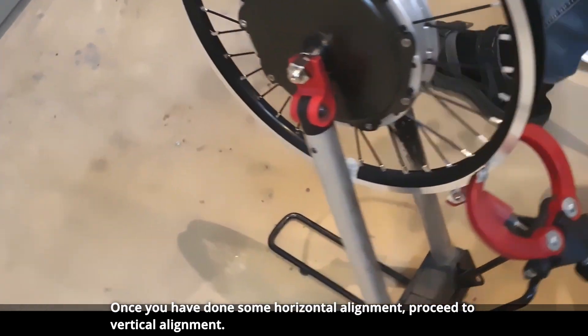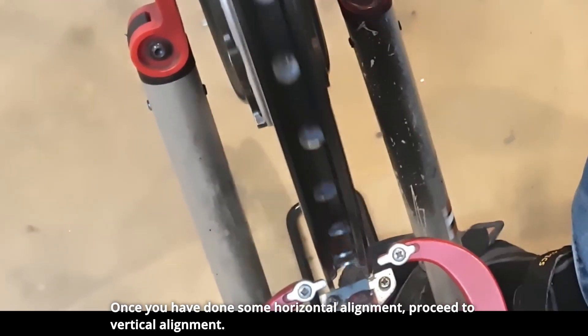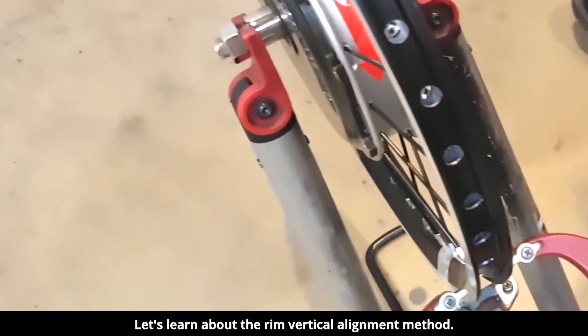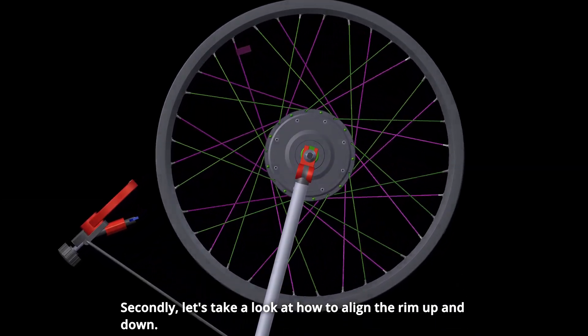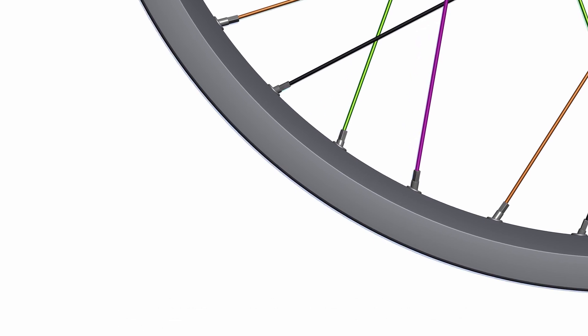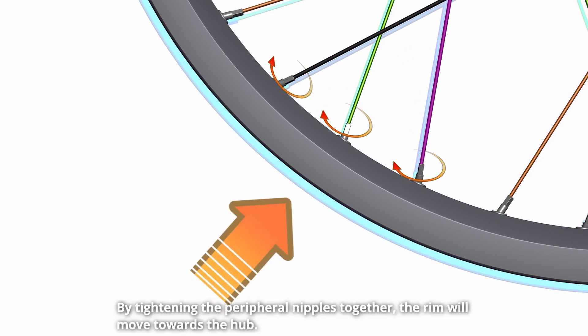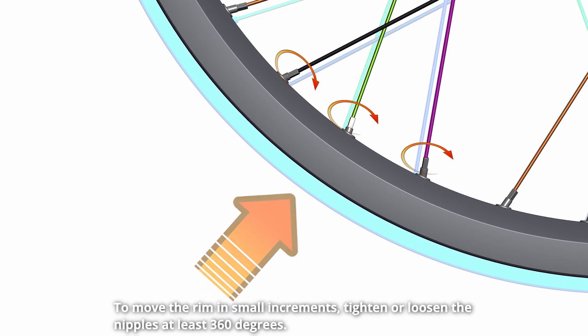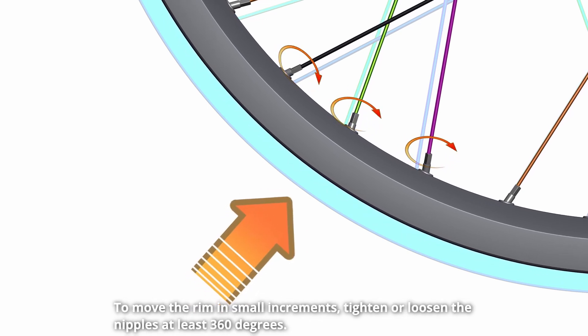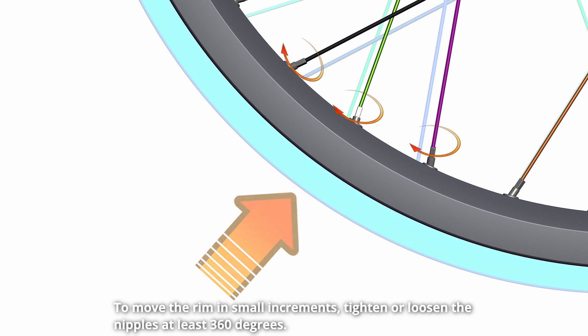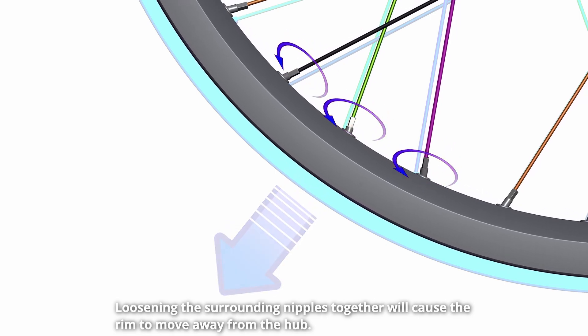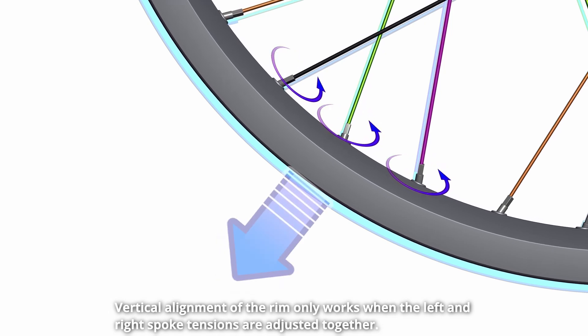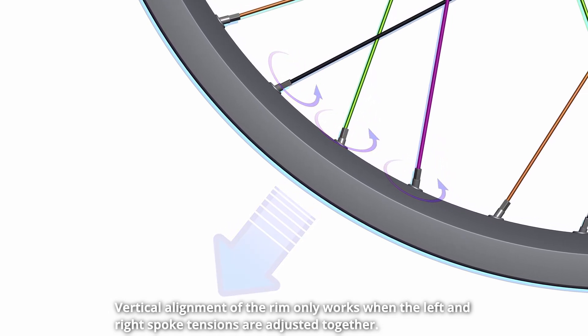Once you have done some horizontal alignment, proceed to vertical alignment. Let's learn about the rim vertical alignment method. By tightening the peripheral nipples together, the rim will move towards the hub. To move the rim in small increments, tighten or loosen the nipples at least 360 degrees. Loosening the surrounding nipples together will cause the rim to move away from the hub. Vertical alignment of the rim only works when the left and right spoke tensions are adjusted together.